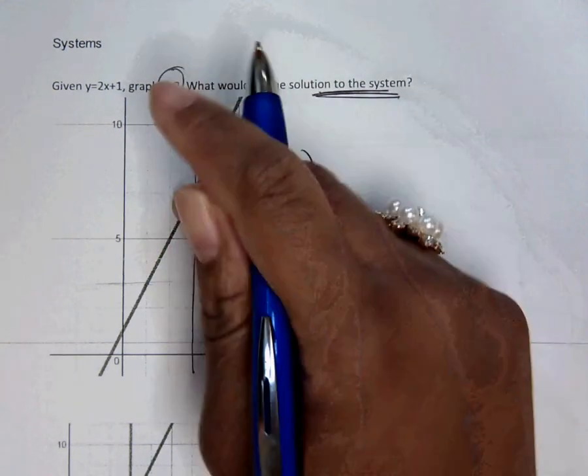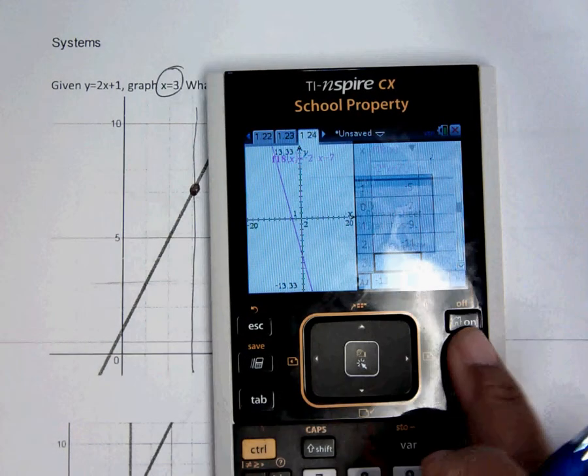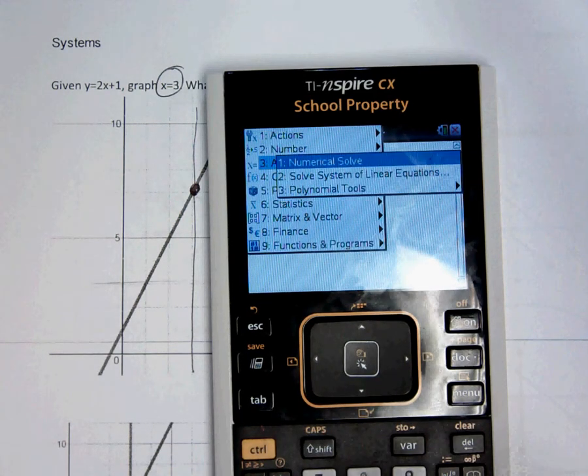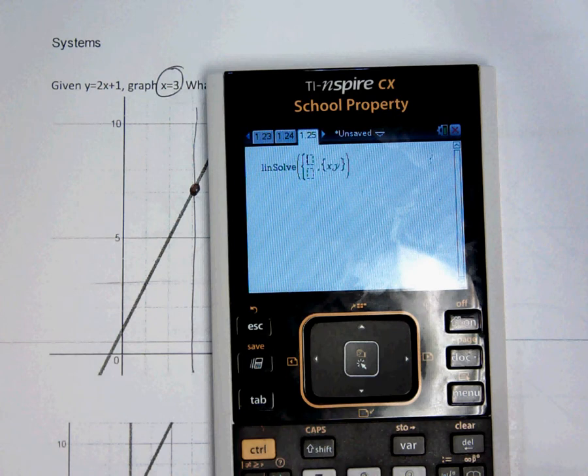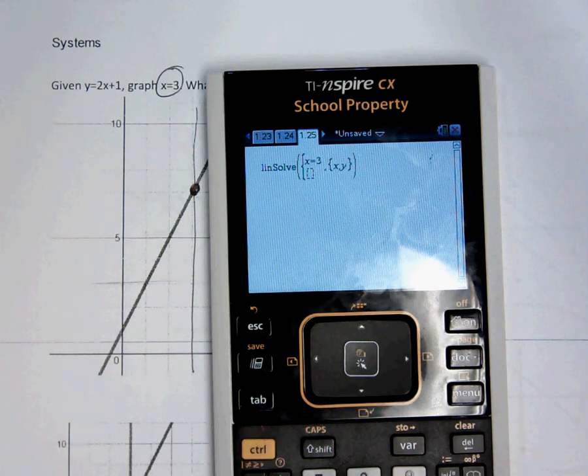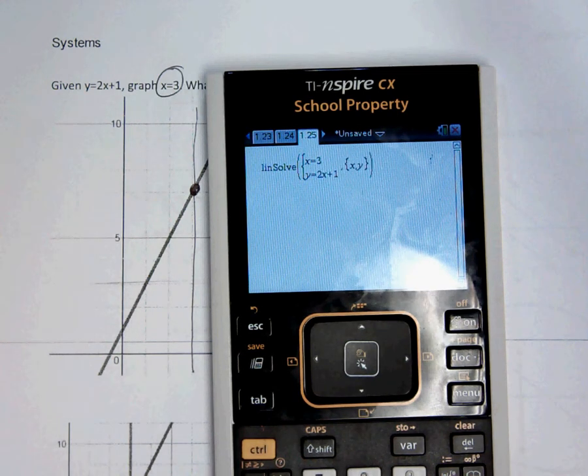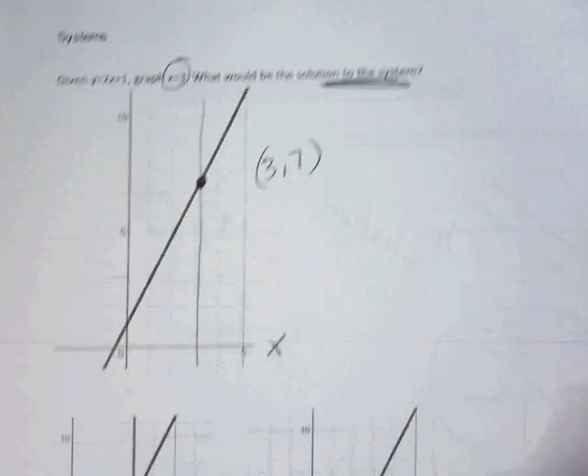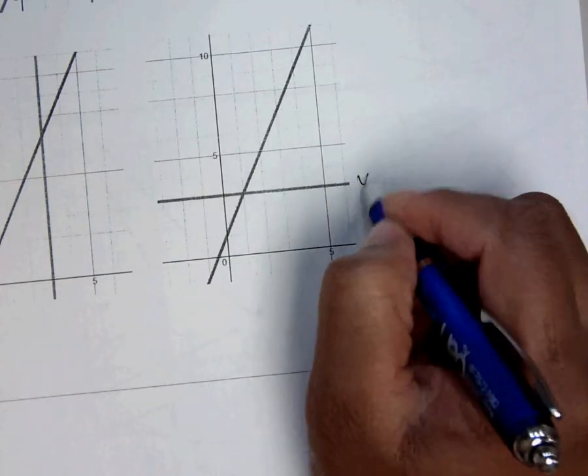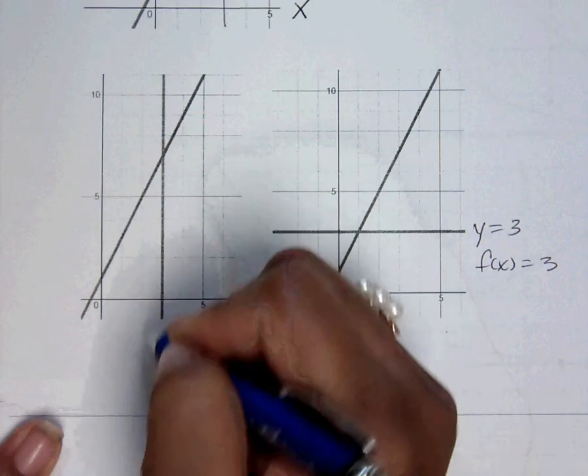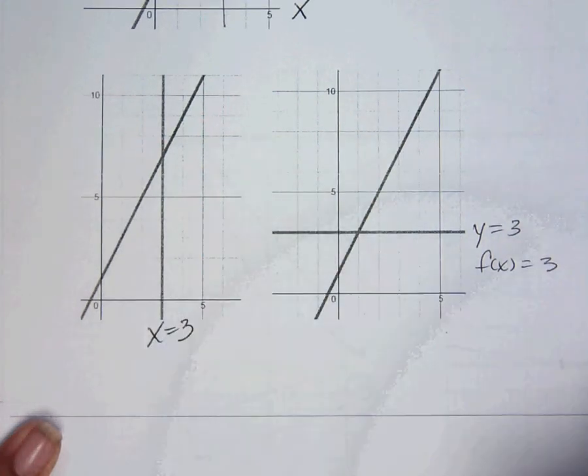Now if you couldn't do that by hand, we know that we can go to menu 3, 2, and graph, or excuse me, type in the two equations given. And there's my 3, 7. So remember, this is y equals 3, or f of x equals 3, and this one is your x equals 3.